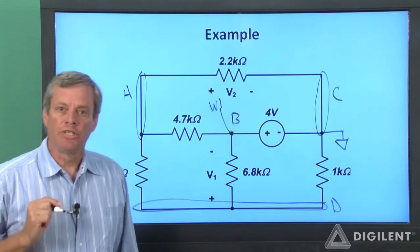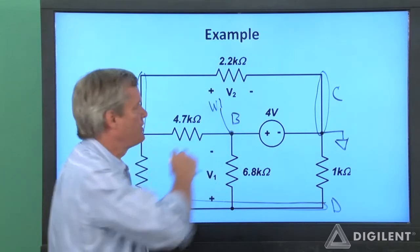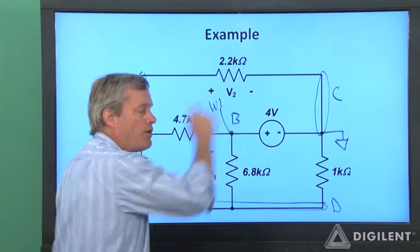I'm going to measure two voltages in this circuit. The voltage across the 6.8 kiloohm resistor, and the voltage across the 2.2 kiloohm resistor. The polarities that I'm going to use are as shown.